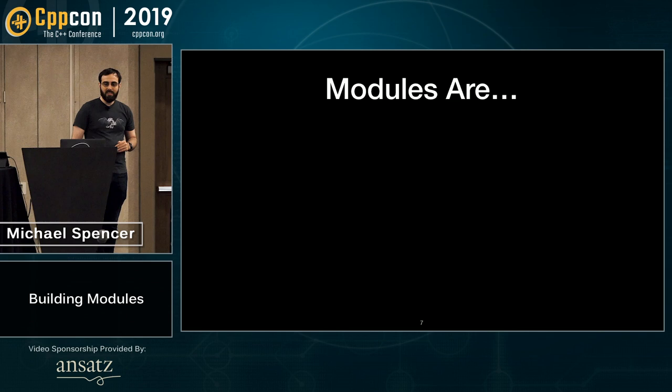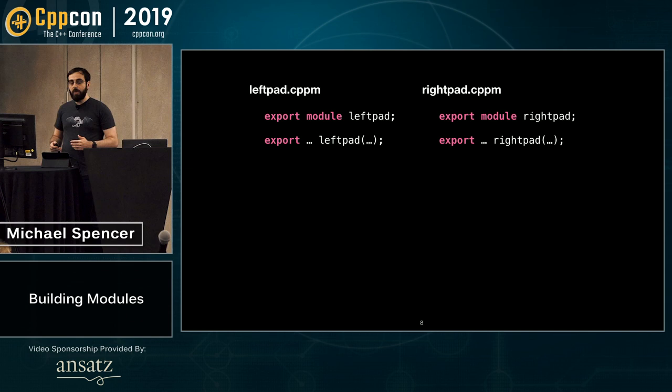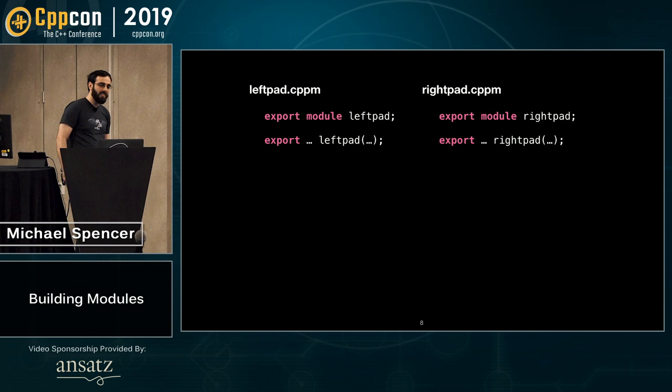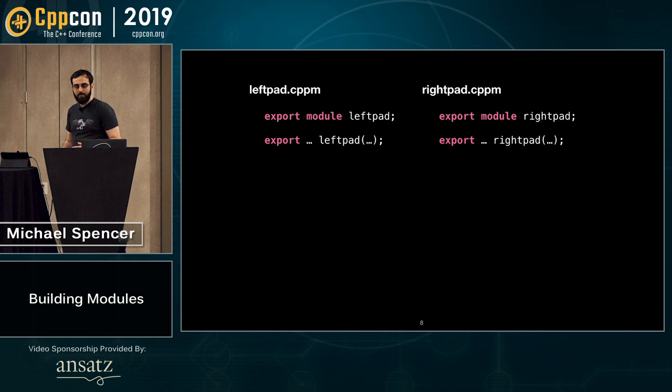What are C++20 modules? Primarily, they are a way to organize your code. Here we have two modules: a left-pad module and a right-pad module. They're separate files. They both define a module interface and export some functions as part of their interface. There's nothing really new here — this is just code organization. You can do this with headers. But modules do some extra stuff.